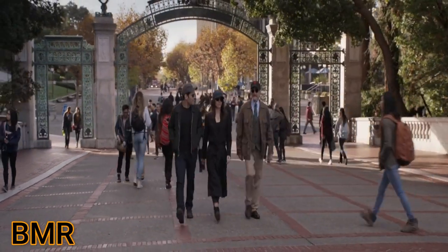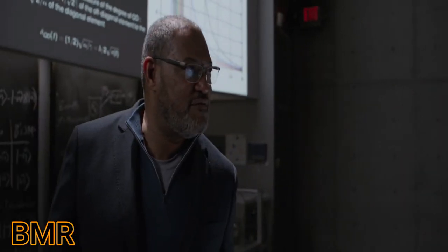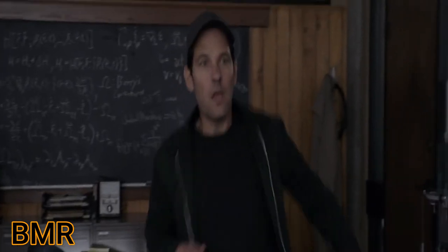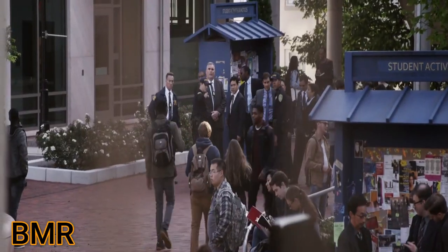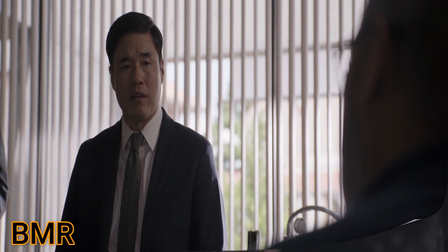Scott, Hope, and Hank go to the University of California to meet with Bill. He argues with his former partner about their differences which eventually led to them splitting up. Scott then sees Woo and his fellow agents outside, thinking they know he's in there. Before they go, Foster tells them that if they modify the diffraction units on one of their old regulators, they can maybe locate the lab. They thank him and quickly leave before Woo meets with Foster, who tells the agents he hasn't talked to Pym in years.